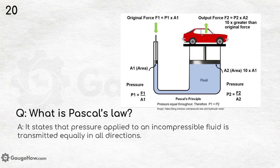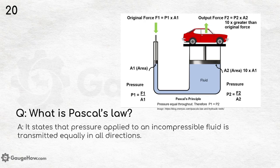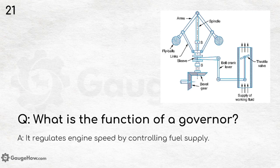What is Pascal's Law? It states that pressure applied to an incompressible fluid is transmitted equally in all directions. As shown in the figure, the input force F1 equals P1 times A1, while the output force F2 equals P2 times A2, which can be 10 times greater than the original force, yet the pressure is equal throughout — P1 equals P2. What is the function of a governor? It regulates engine speed by controlling fuel supply.